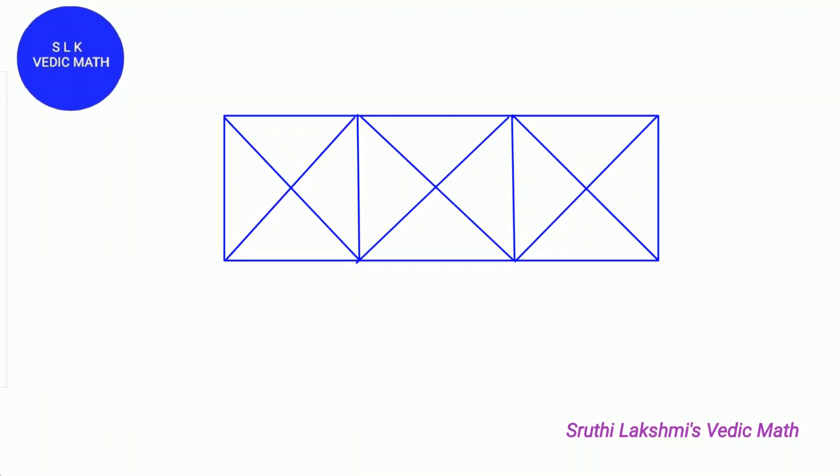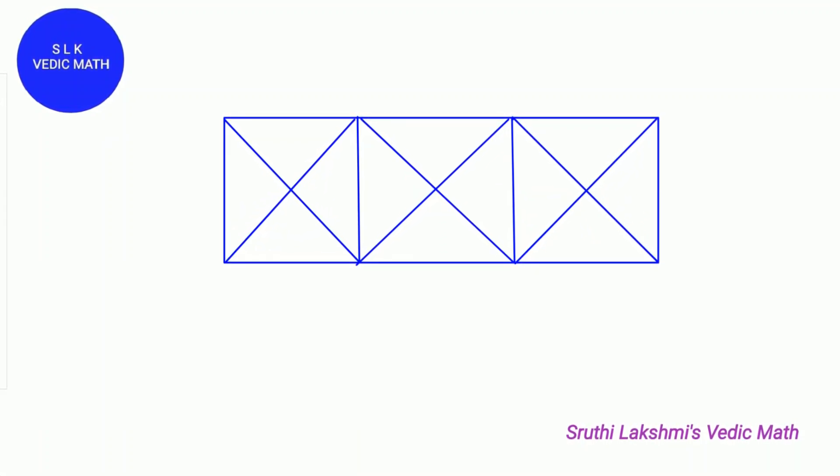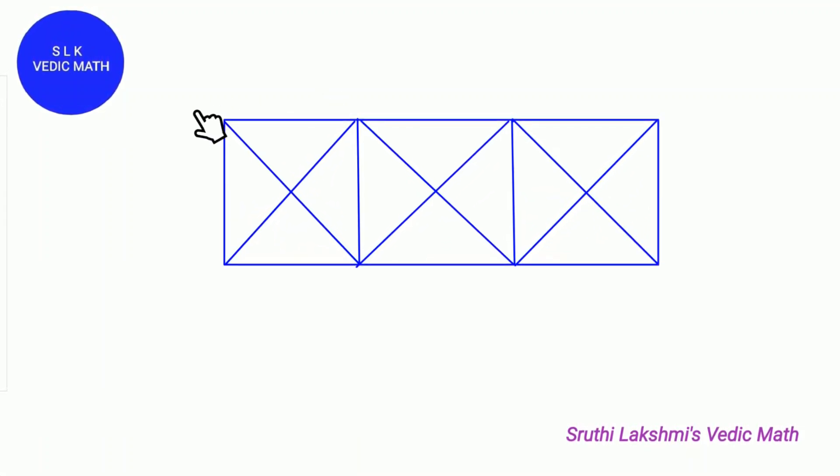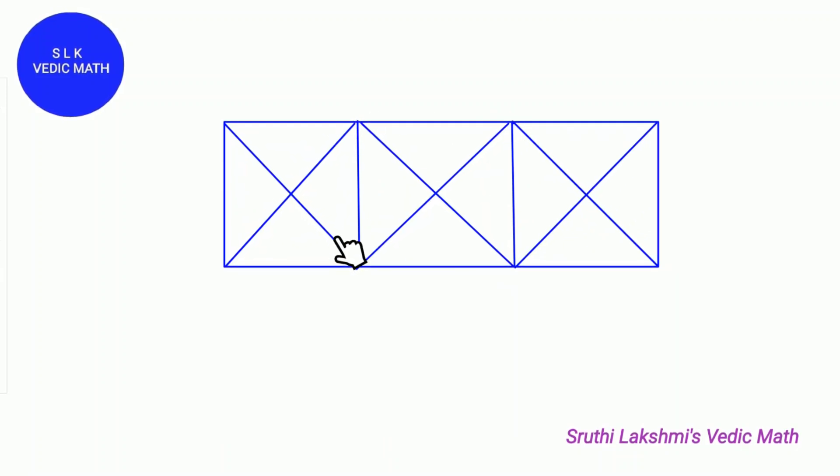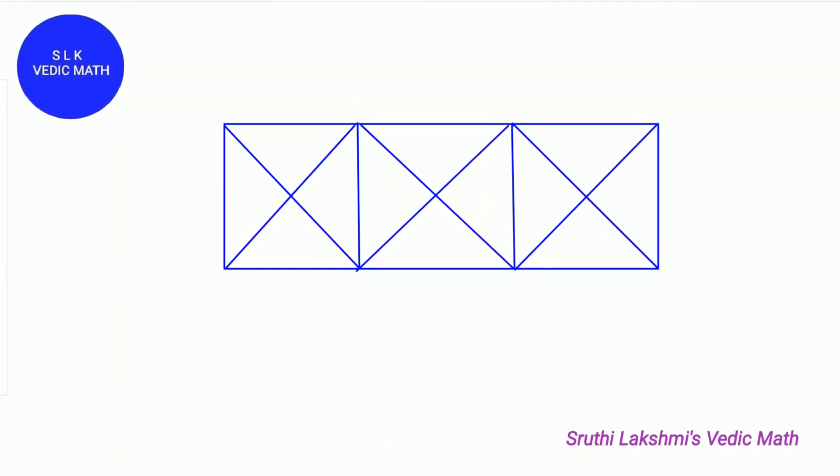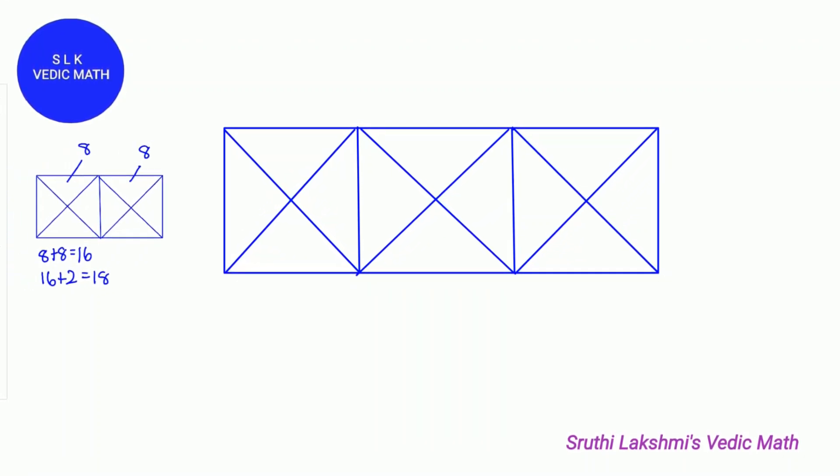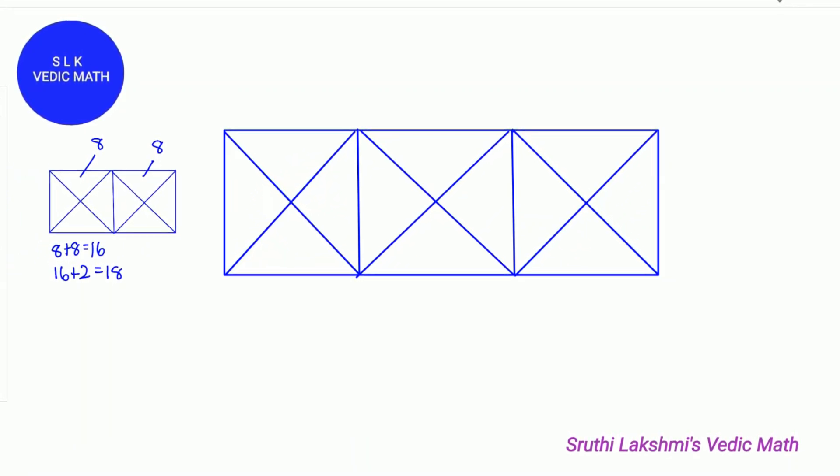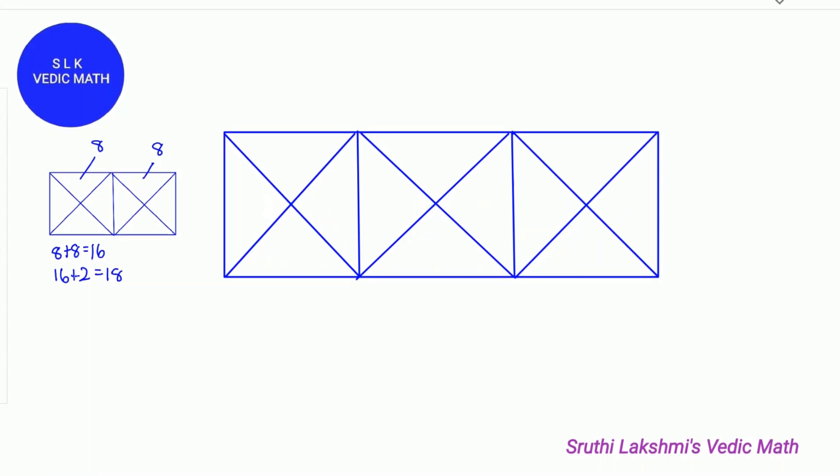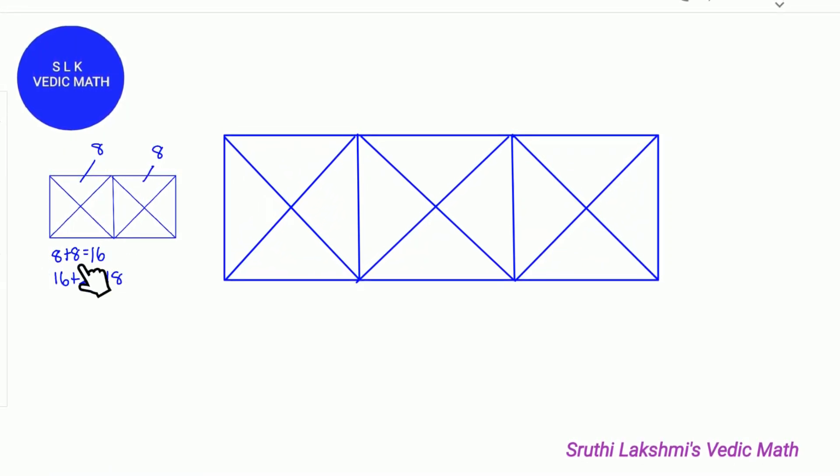Let's try another figure. In this figure, there are 3 squares: 1, 2 and 3. In the last example, there were 2 squares, and it was 18.